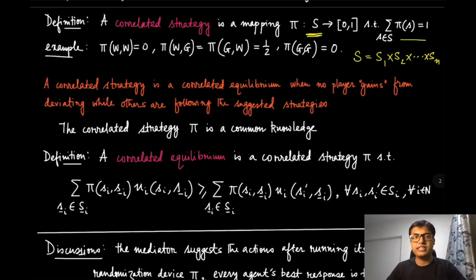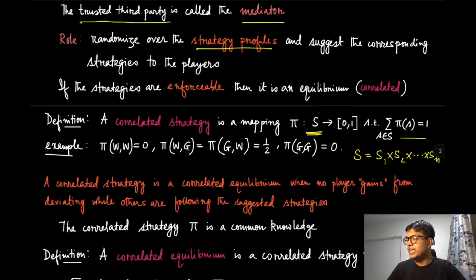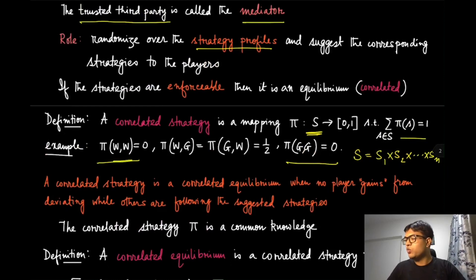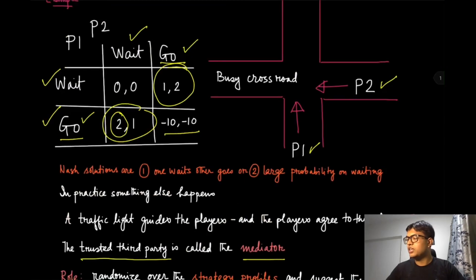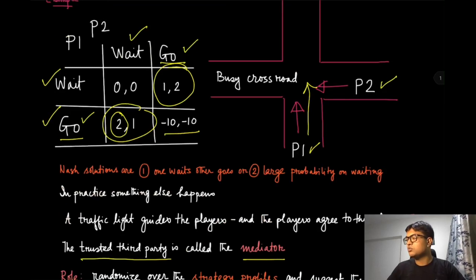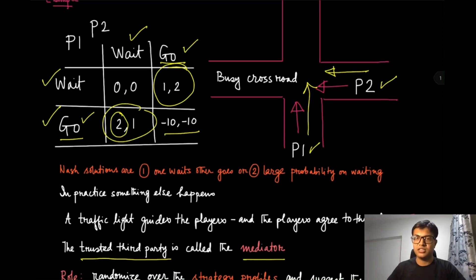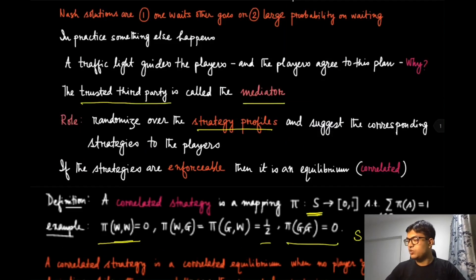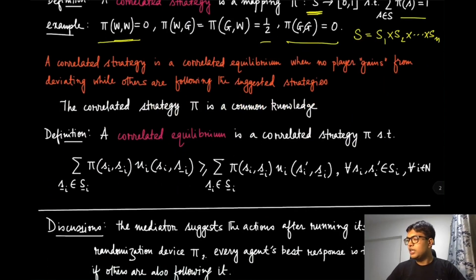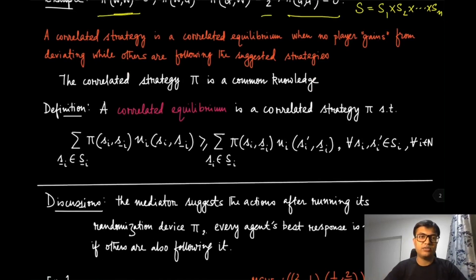Let's look at a simple example in the wait-and-go game. We can say the probability on 'wait-wait' and 'go-go' is zero, and on 'wait-go' and 'go-wait' it is one-half each. That means half the time you are asking one car to move and the other to wait, and the other half you ask the other car to move. That is a valid correlated strategy.